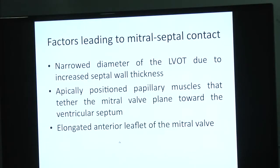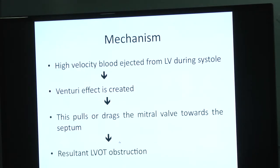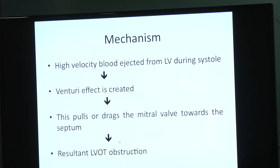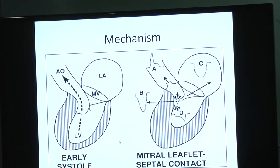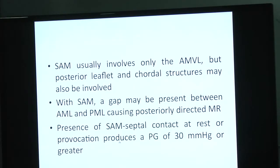Factors leading to mitral-septal contact include: a narrow LVOT diameter due to increased septal wall thickness; apically positioned papillary muscles that tether the mitral valve plane toward the ventricular septum; and an elongated anterior mitral leaflet. High velocity blood creates a Venturi effect, pulling the anterior leaflet into the LVOT, causing obstruction. SAM normally involves the anterior mitral leaflet but can involve the chordae and posterior mitral leaflet.